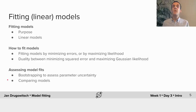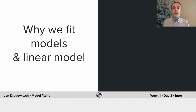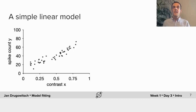So why do we fit models and what are linear models? Let's start with a simple example. Assume that you have some data where a visual stimulus — that is, some image on a screen — has been shown to an animal and we've recorded spike counts of a neuron in some visual area in the brain. For each repetition of the stimulus, shown by one dot each, we have varied its contrast shown on the horizontal axis, which results in a change of the measured spike count shown on the vertical axis.